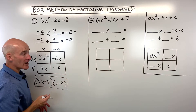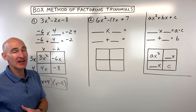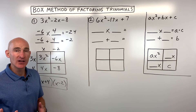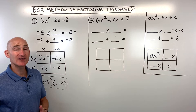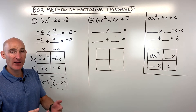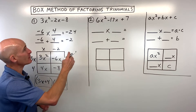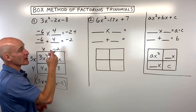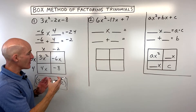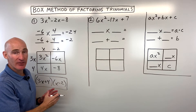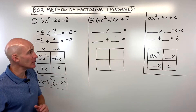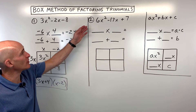When you do any type of factoring problem, you always want to look for a greatest common factor first. If you can factor out that greatest common factor out of your trinomial, do that first and then use the box method to factor further. Let's go to example number 2.